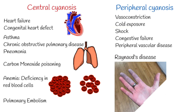Raynaud's disease is a condition that causes the blood vessels in the fingers and toes to constrict in response to cold temperatures or stress. This can lead to poor circulation and peripheral cyanosis.